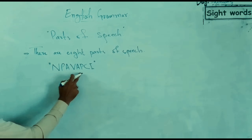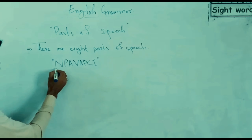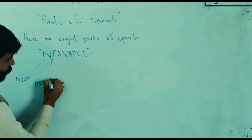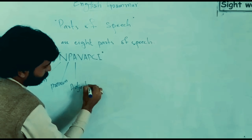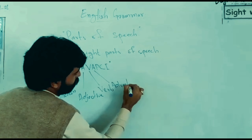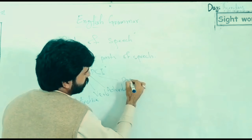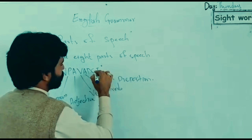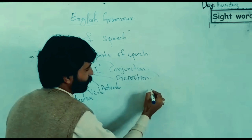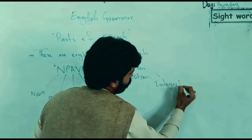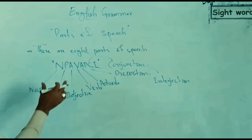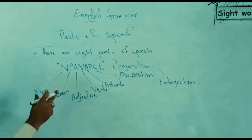That single word is NIPA VOPSY. What is NIPA VOPSY? N for Noun, P for Pronoun, A for Adjective, V for Verb, P for Preposition, and C for Conjunction, and the last one, I for Interjection. These are the parts of speech included in the single word NIPA VOPSY — a short trick to easily understand English grammar.